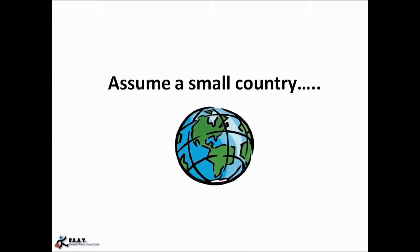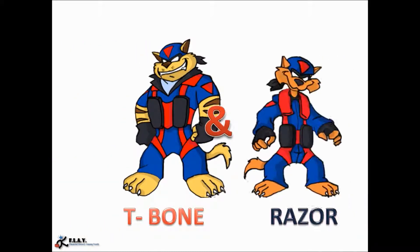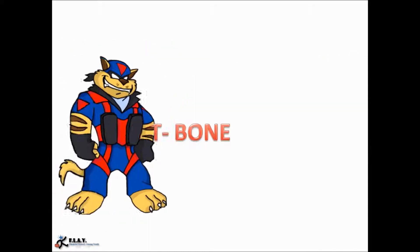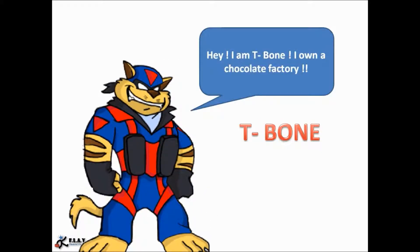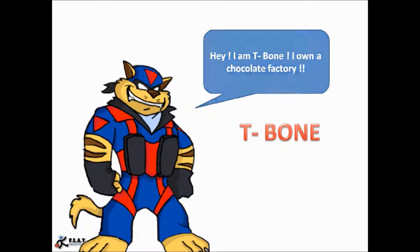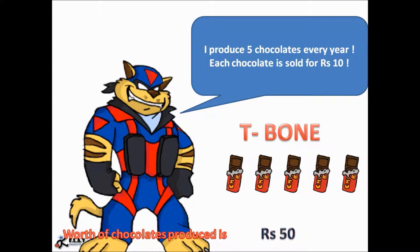We'll start with taking an assumption. We'll assume there is a small country. In this country, there are only two guys living — T-Bone and Razor, the SWAT cats. T-Bone likes chocolates and he owns a chocolate factory. In his chocolate factory, he produces five chocolates, each of which is sold for rupees 10. So the worth of the chocolates produced by him is rupees 50.